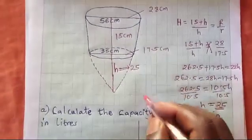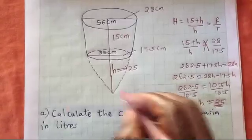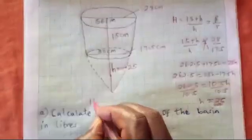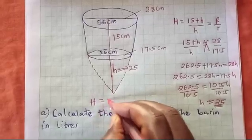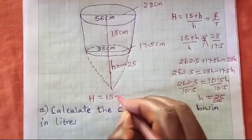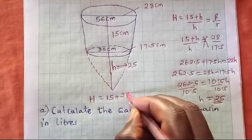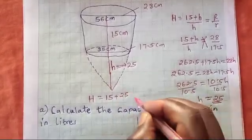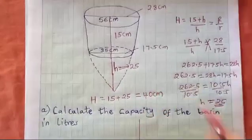Now for the bigger height: the bigger h is the depth of the basin plus the height of the smaller cone, which gives us 15 + 25 = 40 centimeters.